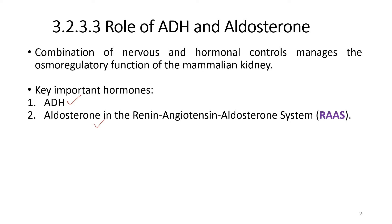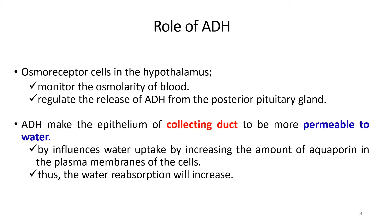Role of ADH: osmoreceptor cells in the hypothalamus monitor the osmolarity of the blood and regulate the release of ADH from the posterior pituitary gland. ADH makes the epithelium of the collecting duct more permeable to water, influencing water uptake by increasing the amount of aquaporin in the plasma membrane of the cell, causing water reabsorption to increase.